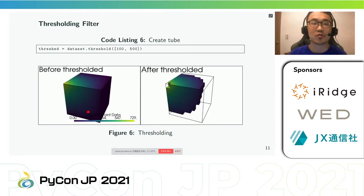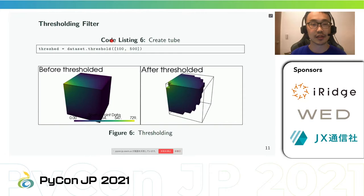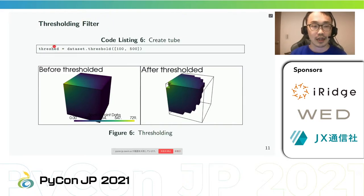In this slide we use common filters like thresholding and clipping. PyVista data objects have a suite of common filters ready for immediate use directly on the object. To use these filters, call the method of your choice directly on your data object and there will be a thresholded version of the input data set in the new variable. To learn more about available keyword arguments, print the docstring for any filter attached to a PyVista object using either help() or Shift+Tab in an IPython environment.